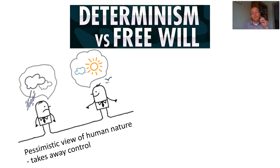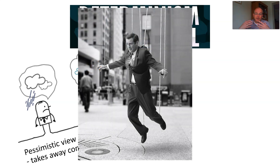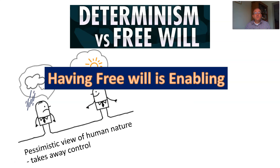However, determinism is seen as a pessimistic view of human beings, meaning you have no control and there's nothing you can do. Whereas if you agree with free will, there's an optimistic view — the idea that you can take control. With determinism you are the puppet on strings, whereas free will enables you to say, 'Well actually I have some choice, so I can do something.' That's an aspect of things like CBT.